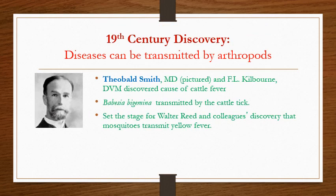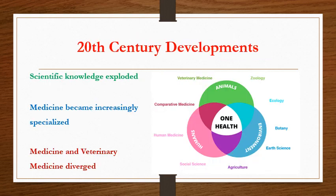Further discoveries in the 19th century include those by Theobald Smith and veterinary doctor Kilborne, who discovered babesiosis in cattle and laid the foundation for the discovery of yellow fever. Coming into the 20th century, there was more scientific progress and an explosion of scientific knowledge. Medicine became increasingly specialized; however, animal medicine, veterinary practices and human medicine became more diverged, with greater separation between different branches of medicine and veterinary medicine.